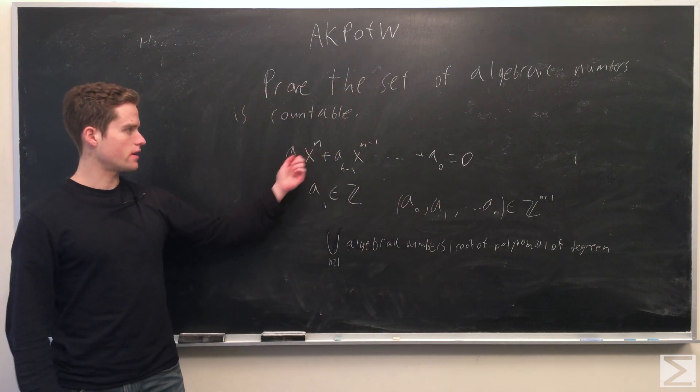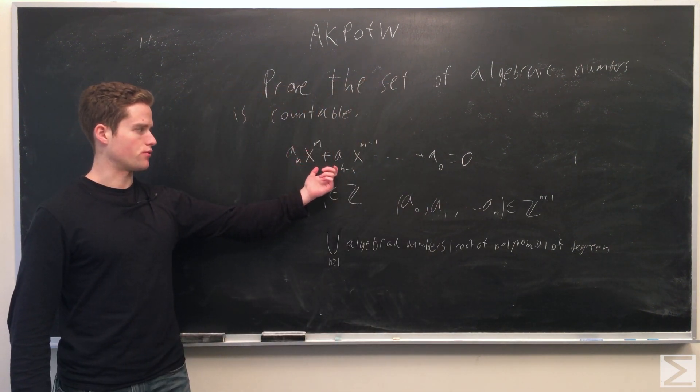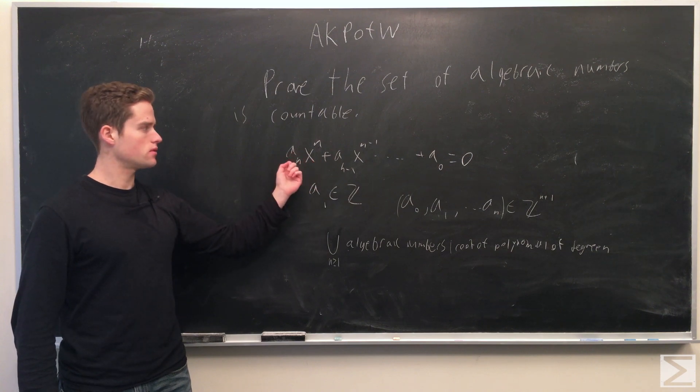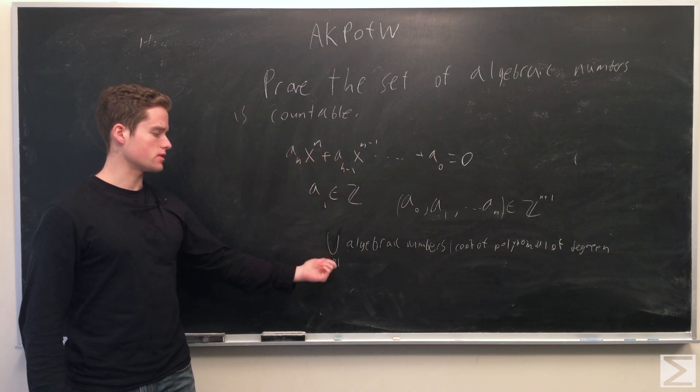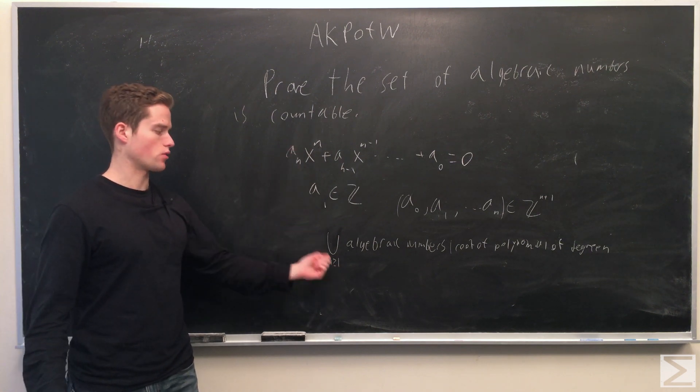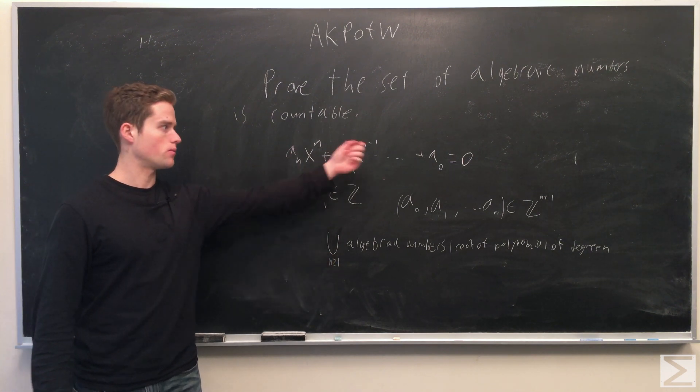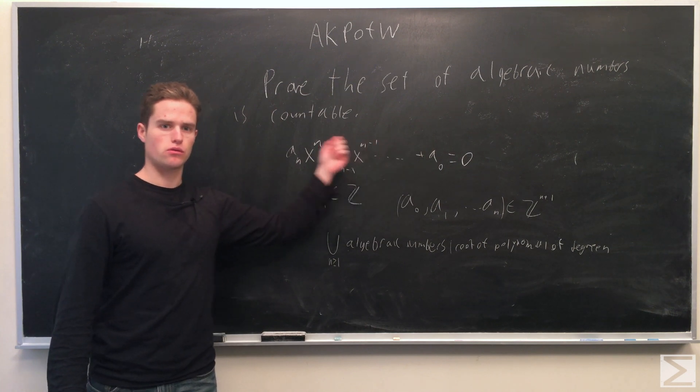So now that we've established that for our given n, the number of roots or algebraic numbers given these coefficients are integers will be a countable set, now we just need to take the union of all these for all the different n. So going over n greater than equals 1, so polynomials of order 1, 2, 3, etc.